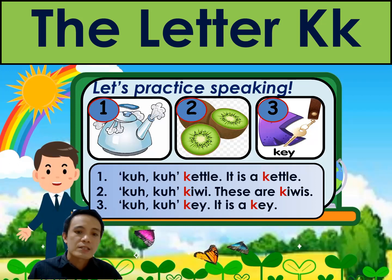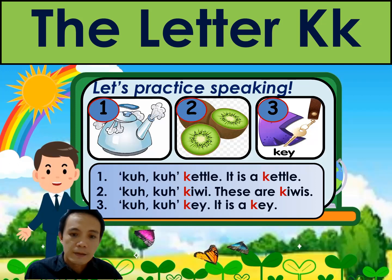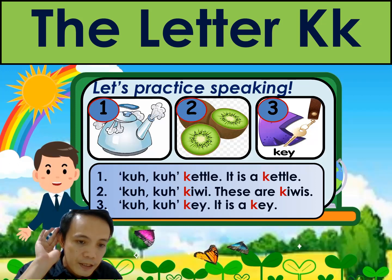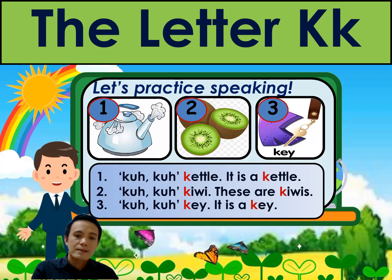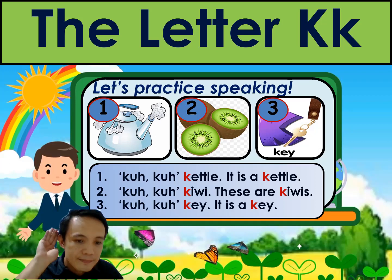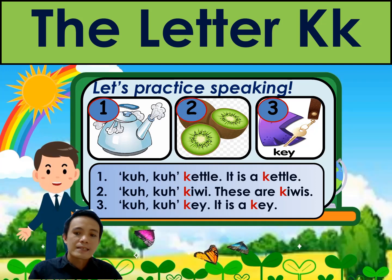Okay, next. Number two: K, k, kiwi. These are kiwis. K, k, kiwi. These are kiwis. Okay, next. Number three: K, k, kiwis. It is kiwis. Say it — K, k, kiwis. It is kiwis.